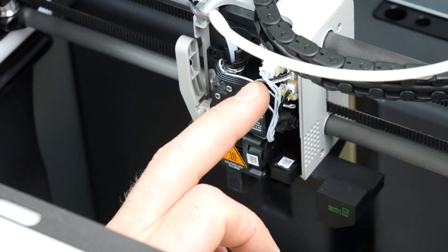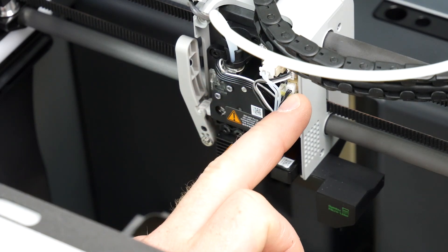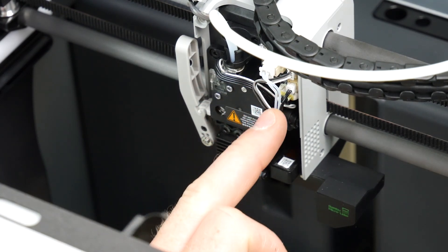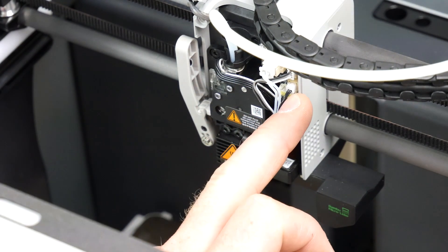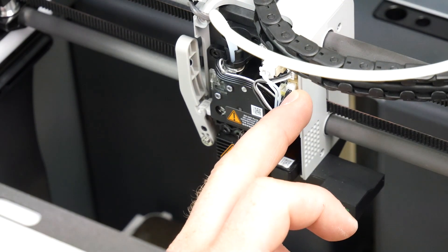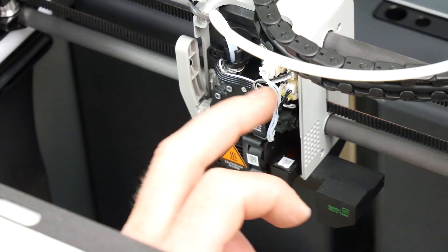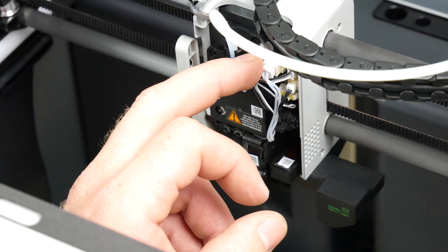Next thing we need to do is remove the three connectors that you'll see here that have wires that run down to the hotend. One of them, the bottom one, is the temperature sensor. You've then got a fan and a heating cable as well.